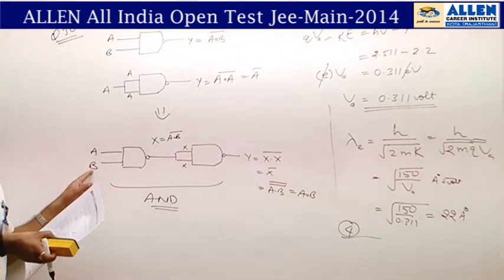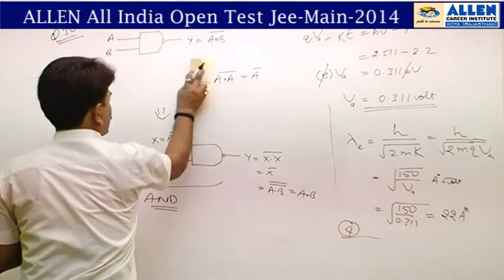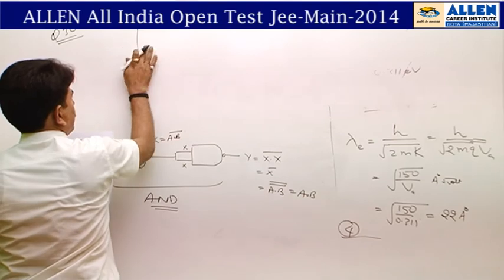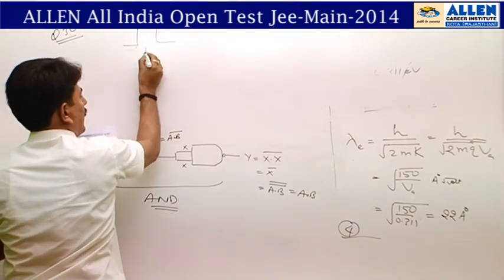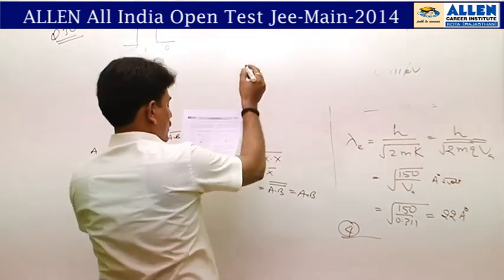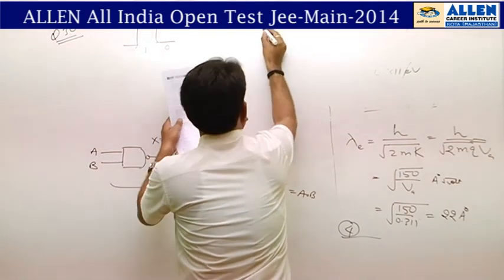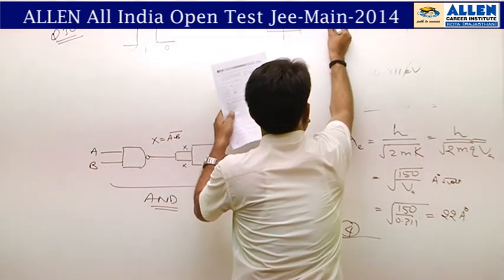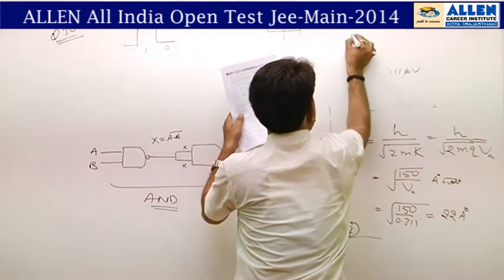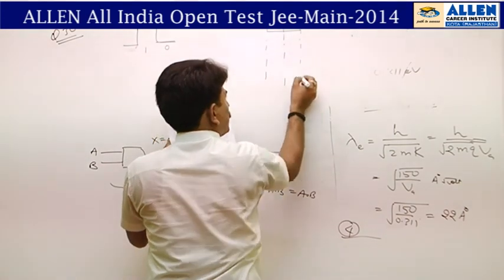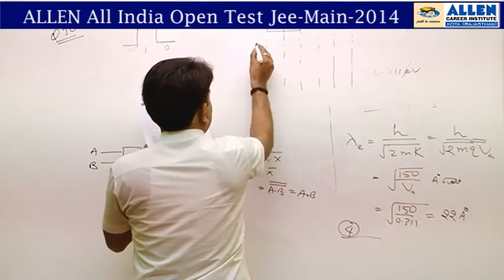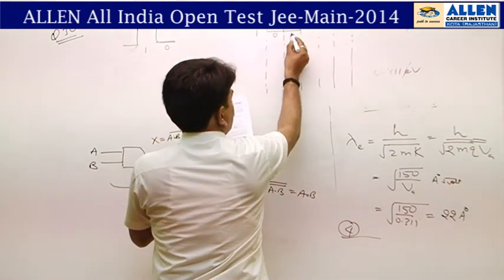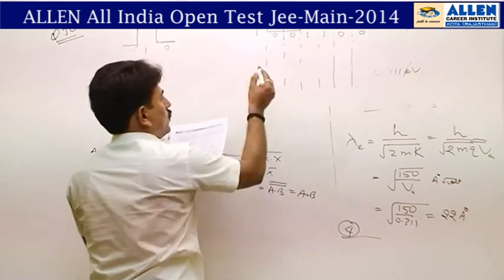Now the question provides input waveforms. Digital waveforms have two levels: high (1) and low (0). Input A waveform: reading from the graph it goes high, then low, giving values 1, 0, 0, 1, 1, 0, 0 across successive time intervals.